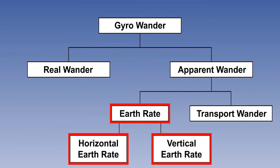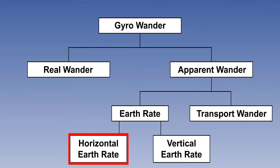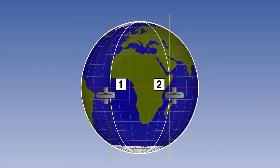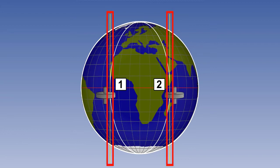The way the earth rate varies with latitude will depend on whether it is the horizontal component or the vertical component of earth rate which is being considered. We will start by considering the horizontal component. Imagine an aircraft parked on the equator with the gyro axis pointing to true north — that is, aligned with the local meridian. As the earth rotates from position 1 to position 2, the gyro axis remains fixed in space and also remains aligned with the local meridian. At the equator, the gyro direction has not changed with respect to earth direction — it is still pointing in a direction parallel to the original one, which is true north. Earth rate is therefore zero.